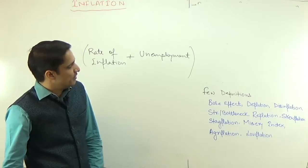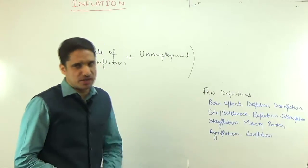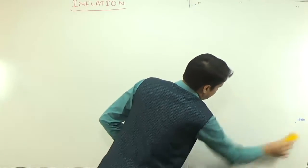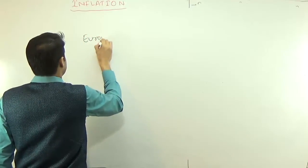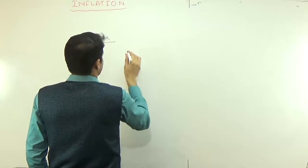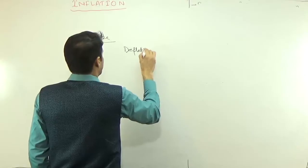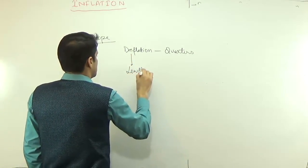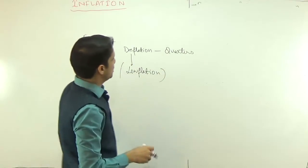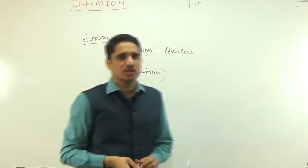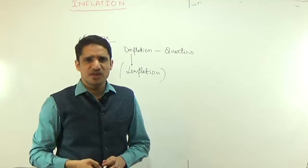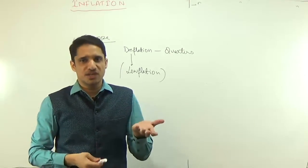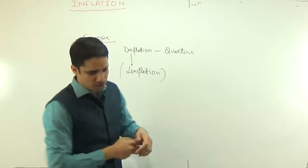Then we have agriflation — inflation due to agricultural commodities. Then there is a new term, lowflation, recently coined by the IMF specifically for European countries. If there is persistent deflation in the economy for consecutive multiple quarters, that situation has been called lowflation by the IMF. Lowflation is a recently coined term by the IMF and can be asked in exams — it means persistent deflation for many quarters.